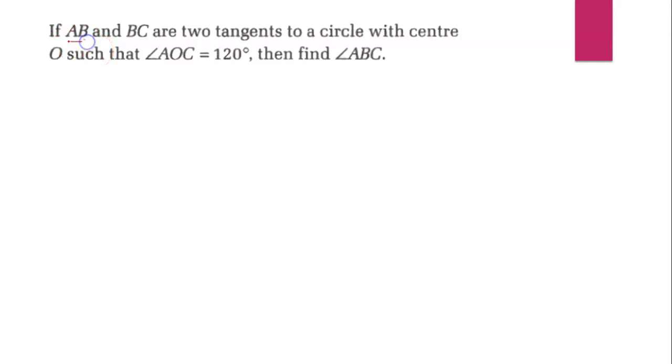Today's question is: if AB and BC are two tangents to a circle with center O such that angle AOC is equal to 120 degrees, find angle ABC.